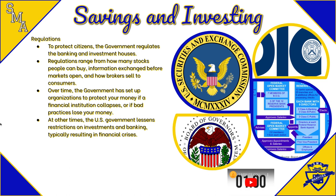Government organizations that protect consumers include the FDIC, which protects your accounts in a bank — if that bank fails, you will always have that money. There are also protections for mutual funds in the stock exchange. Sometimes you can't control the bad practices of people running financial institutions you've given your money to. When the United States lessens restrictions on banks and investment houses, the result is usually a financial crisis.